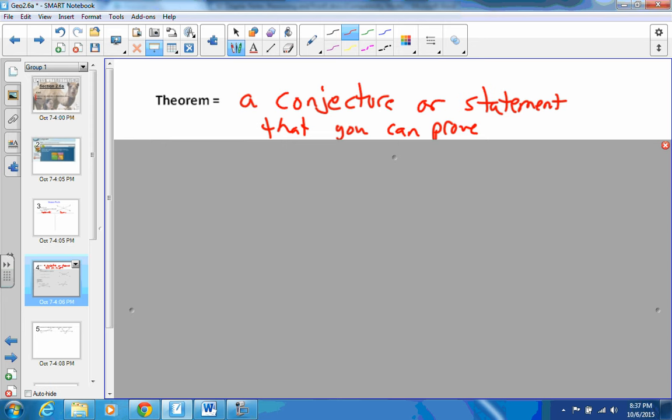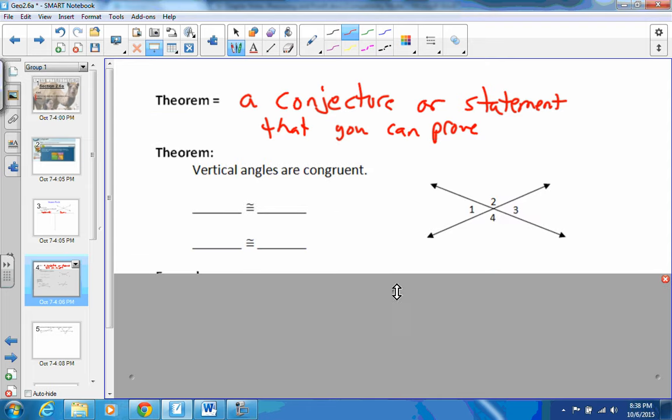So some of these theorems that I'll give you, you can just use and trust that they're already proven, because they are theorems. Sometimes we'll practice proving them as well. So the first theorem that I'm going to show you, and this definitely is one of the most commonly used ones, especially among angle proofs, is that vertical angles are congruent. So you've first got to remember what vertical angles are.